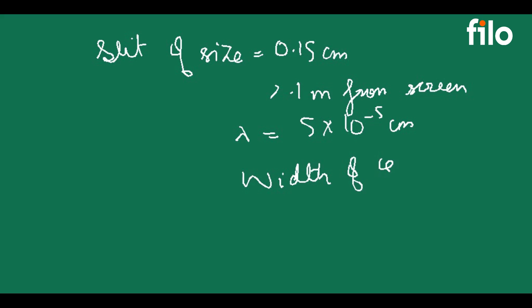So basically we have a slit which is of size 0.15 cm and it is placed 2.1 meter from screen. We have a light which has wavelength 5 × 10 to the power minus 5 cm. So we need to find width of central maxima. We can denote the slit size.